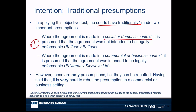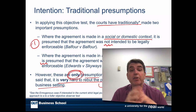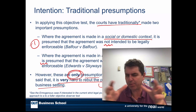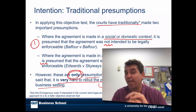The courts traditionally make two important presumptions. First, if an agreement is a social or domestic one, it's presumed the agreement is not intended to be legally enforceable. Where the agreement is a commercial or business one, it is presumed that the parties intend legal relationships to be established. It's important to recognise that these are only presumptions — they can be rebutted. But it's very hard to rebut the presumption in a commercial or business setting. You actually have to have explicit words stating you're not intending to be legally bound, and even then it's questionable. If you enter an agreement in a business context, particularly if you reduce it to writing, it'll be taken that you intend to create legal relationships.